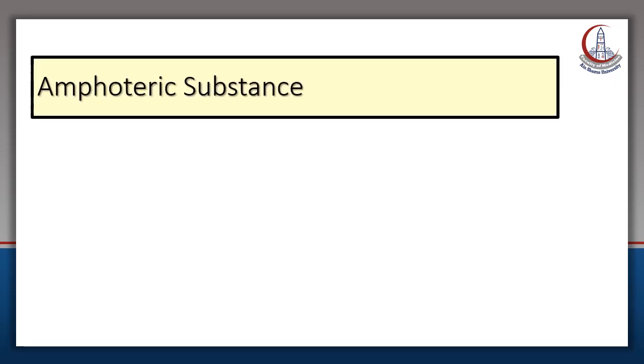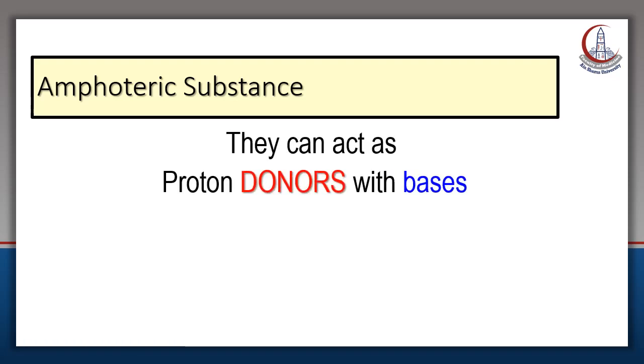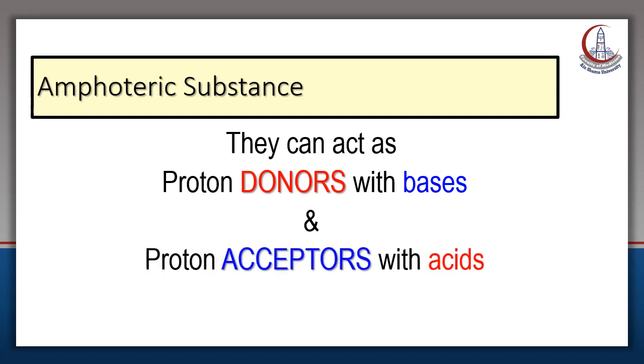An important definition is amphoteric substance. What is the meaning of amphoteric substance? They can act as proton donors when they react with base, or proton acceptor when they react with acid. If I put the amphoteric substance with a basic substance, it will act as a proton donor to neutralize the OH-. If I put it with an acidic substance, it will act as a proton acceptor.